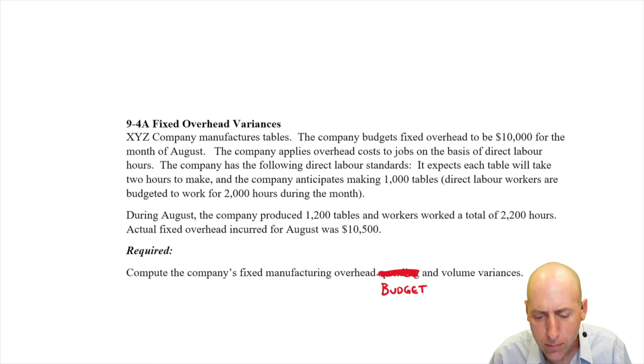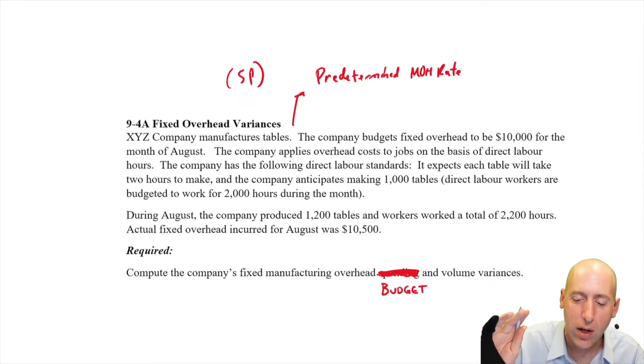XYZ company manufactures tables. The company budgets fixed overhead to be $10,000 for the month of August. By the way, when I'm thinking about fixed overhead variances, on the top of my mind is predetermined overhead rate. That becomes my SP if we're thinking AQAP, AQSP, that type of stuff. That's the numerator here of a predetermined overhead rate, and I'm going to divide that by the estimated overhead driver when we get to it.